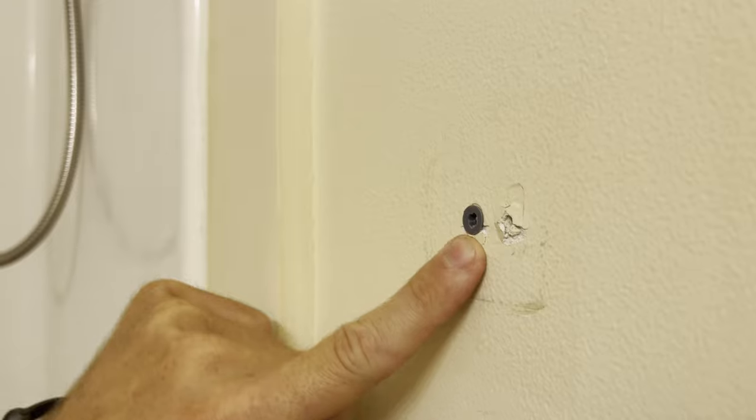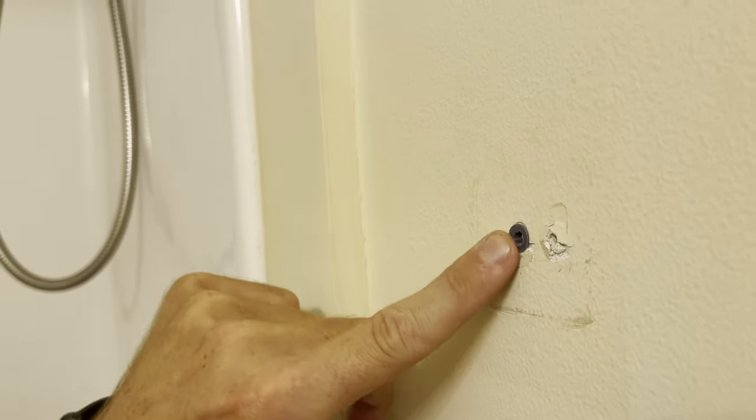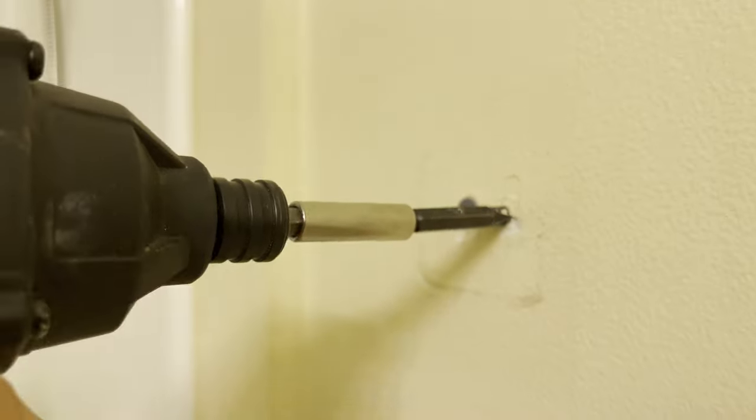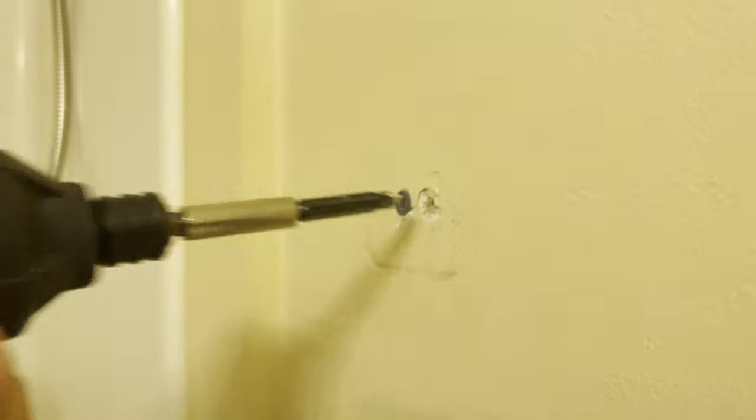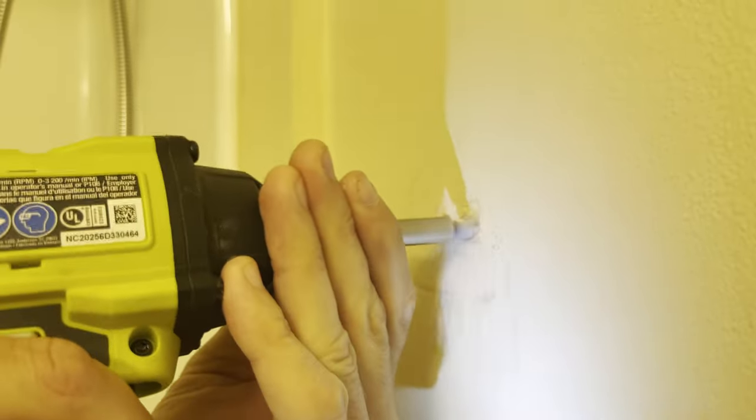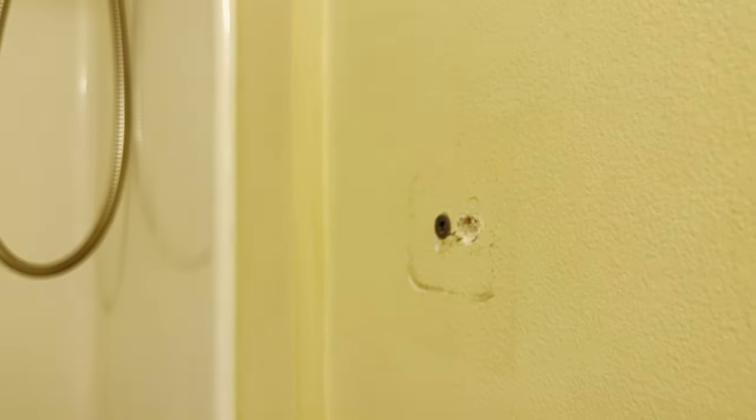Since this one has an anchor already in it, we might keep that anchor and put the toggle bolt screw in this side where the hole is. So first you got to make the hole bigger like so.